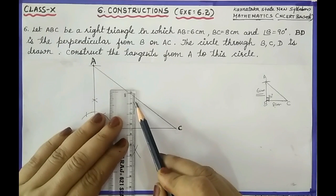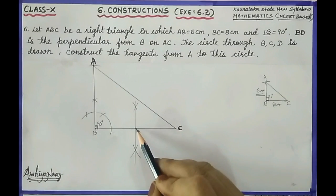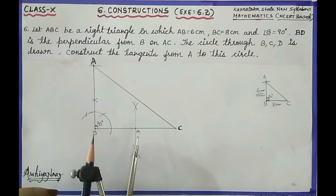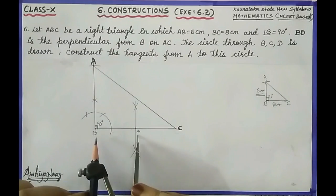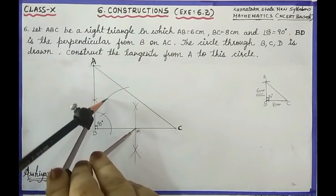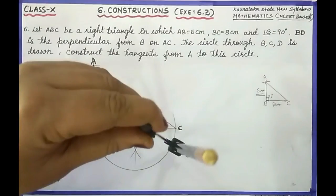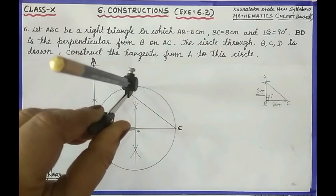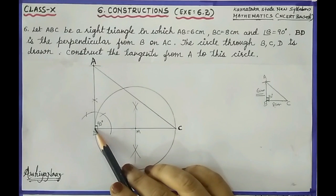Draw the line passing through the points of intersection of arcs — this will be the midpoint M of line BC. Take the compass, place it on point M, and adjust the radius equal to BM. Draw the circle. We have now drawn a circle passing through points B and C.